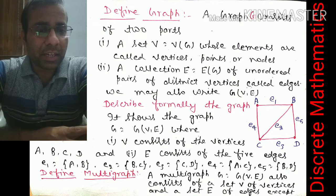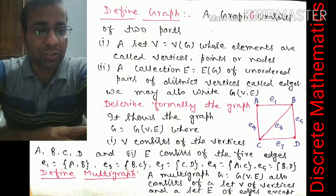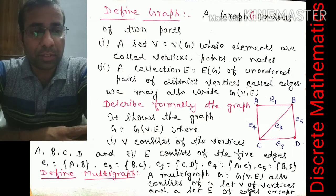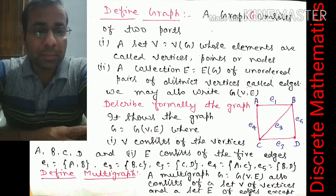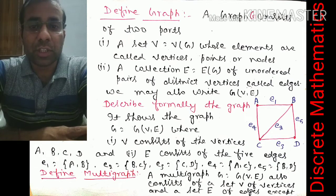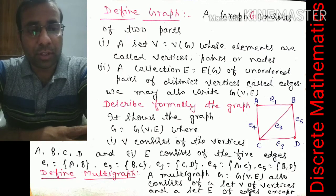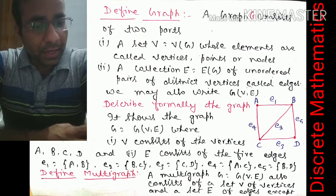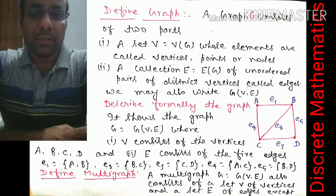We will describe the graph formally. Graph G = G(V, E) where V consists of vertices {A, B, C, D} and E consists of five edges: e1 = (A,B), e2 = (B,C), e3 = (B,D), e4 = (A,C), and e5 = (B,D). Each edge represents a line between two vertices.